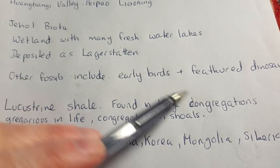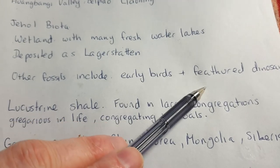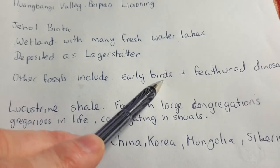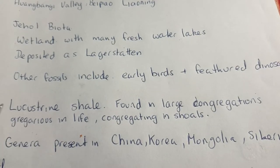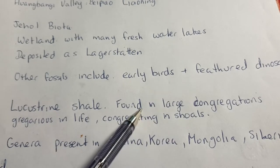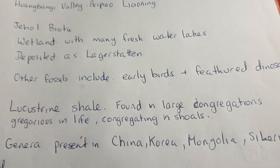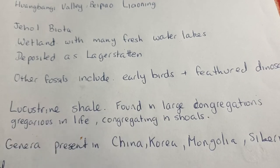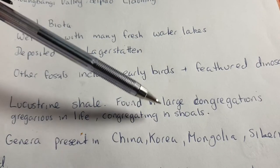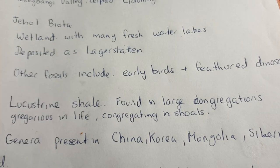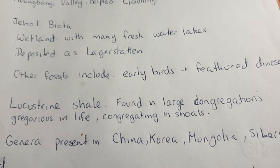Because it is a lagerstätte it can preserve a lot of other details like internal organs and fine detail of the skin. This is where we have made a very distinct connection between birds and feathered dinosaurs, in these Chinese fossil locations. It's a lacustrine shale. The fish were feeding in large congregations — they were gregarious in life, swimming in shoals, similar to how tuna swim together in large groups, which would protect them from predators.